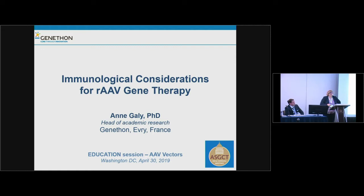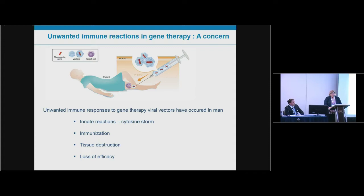Unwanted immune reactions have occurred in gene therapy and this is still a concern. When people are injected with any kind of gene therapy product, several types of reactions have been observed, such as innate reactions with the cytokine storm, which can actually be lethal, immunization against AAV capsid, tissue destruction, and loss of therapeutic efficacy. This can be controlled by immunosuppressive regimens, but there's always a risk-benefit associated to this type of therapy.